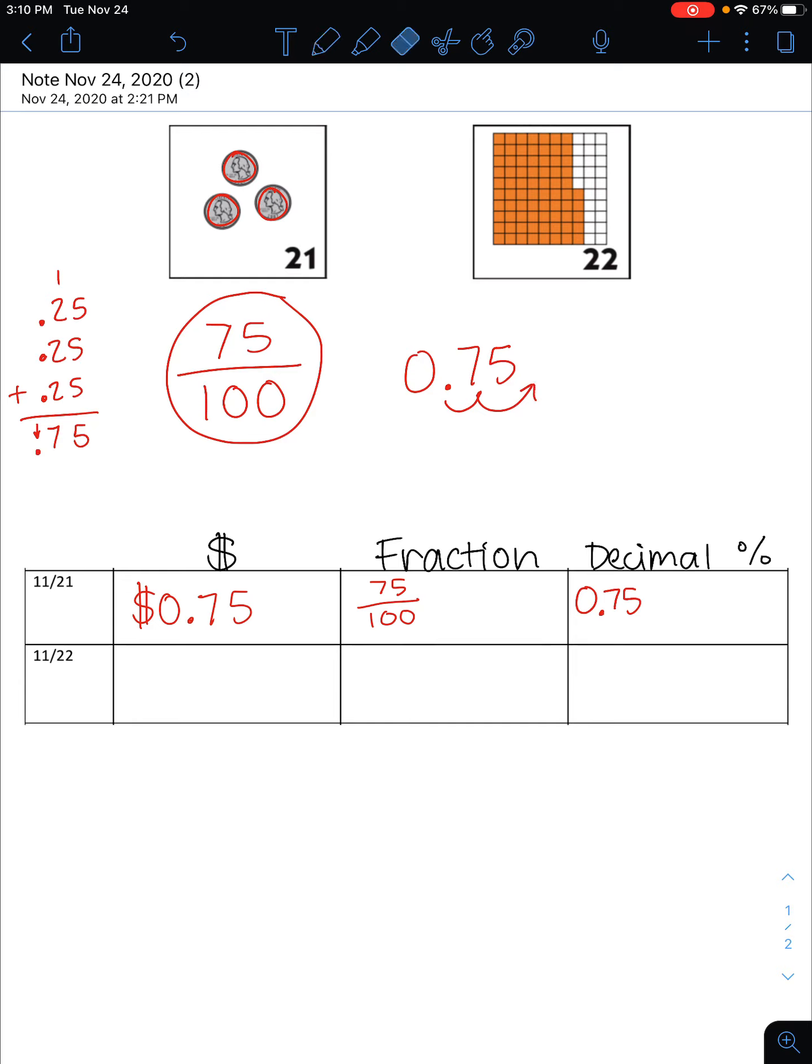If I move my decimal point two spots to the right, I end up with 75 and a decimal point right here. Having a decimal point right here is the same as just having the number 75. Then I add my percentage sign and I get my percent: 75%.